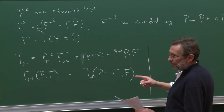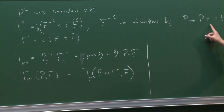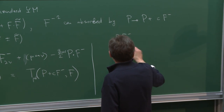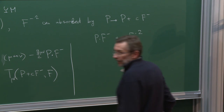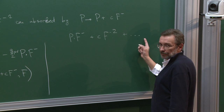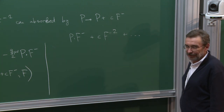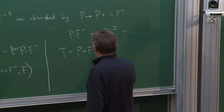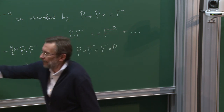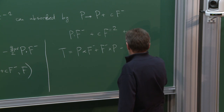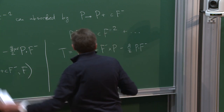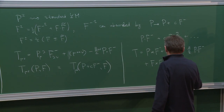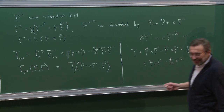Let us do it the other way: first shift the field in the Lagrangian, then compute the stress tensor. Then we would have the Lagrangian P·F_minus + c·F_minus², plus the topological term, and F_minus² is the same as F². The stress tensor will then be P·F + F_minus·P, minus G/2 times P·F_minus, plus the contribution from the new term. So the result is not the same — what happened? This is the puzzle.